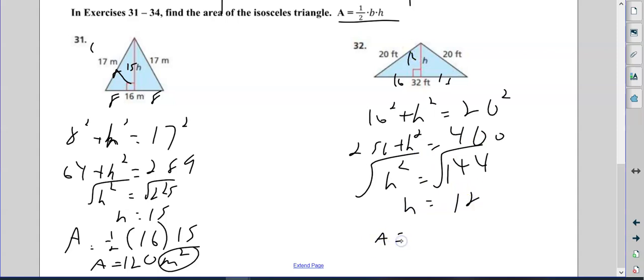So the area of the triangle is one-half the base—the whole thing, not the 16, the 32—times the height. So half of 32 is 16 times 12, or you do half of 12 is 6 times 32, does not matter. That's 192, so the area is 192 square feet. And that is it.